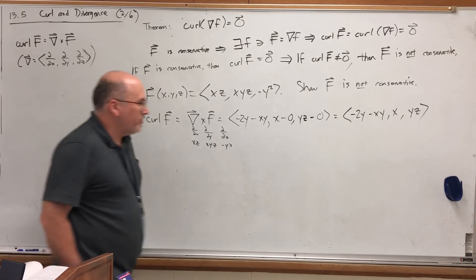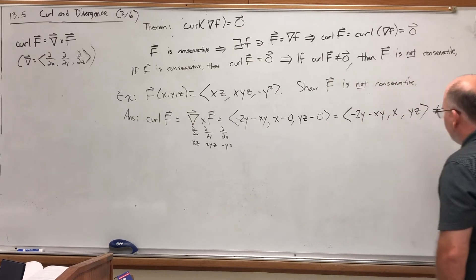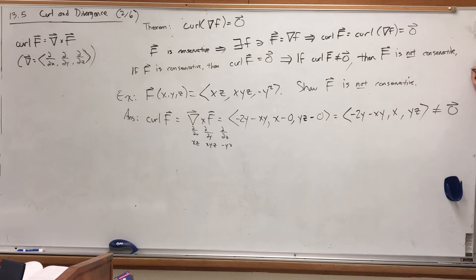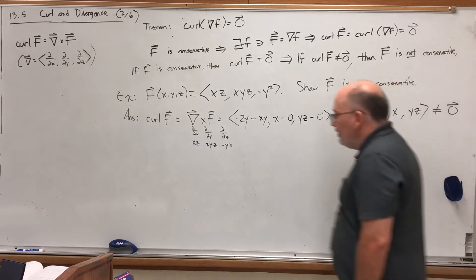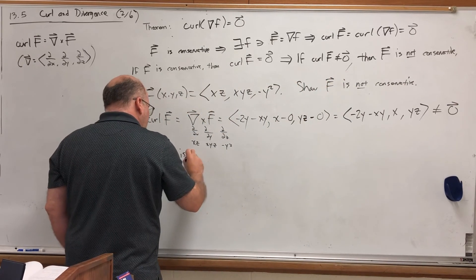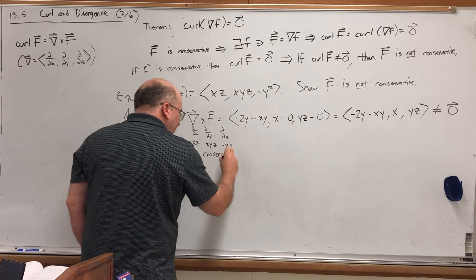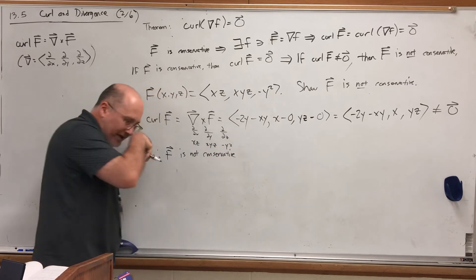That's not equal to the zero vector. There are values of x, y, and z that make it equal to the zero vector — if y were zero and x were zero that would be sufficient — but we don't know that in general. So in general, this is not the zero vector; therefore F is not conservative. If we were doing a line integral, we cannot apply the fundamental theorem of line integrals to it. If you take the curl of a vector field and you don't get the zero vector, then your vector field is not conservative to begin with.